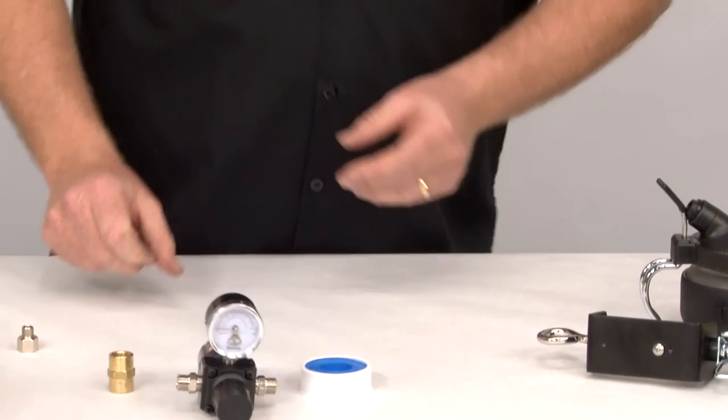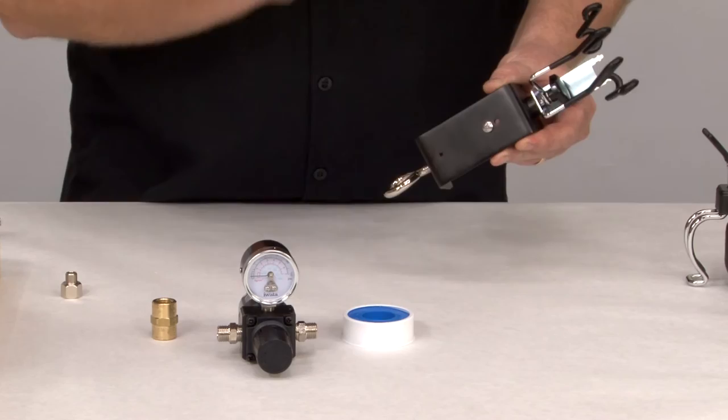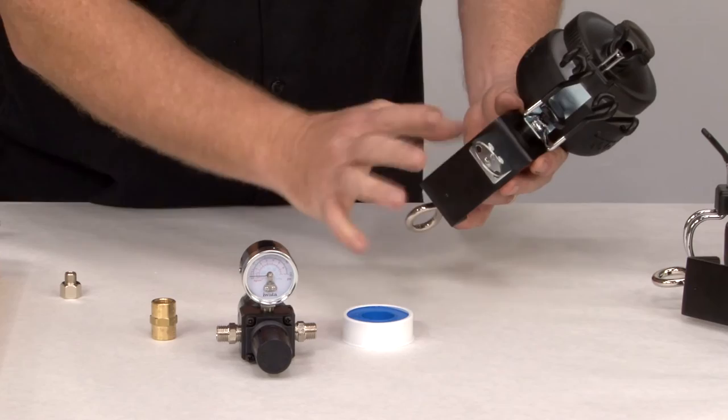Remember before I showed you the little mystery screw on the back of the universal airbrush holder? This is what the mystery screw is used for. It's holding up this bracket.